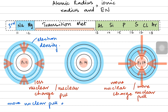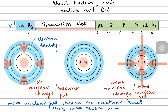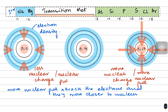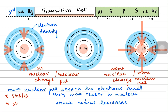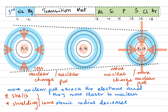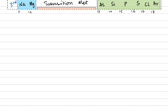More nuclear pull would be able to shrink the atom, so the overall atom becomes smaller and the atomic radius decreases. More nuclear pull attracts the electrons, pulling them closer to the nucleus, so the atomic radius decreases across the period — higher on the left, lower on the right. Two factors remain the same: the total number of shells and the shielding effect. The only factor affecting the atomic radius is the number of protons.